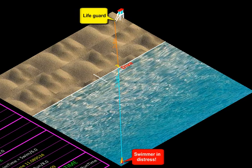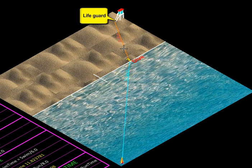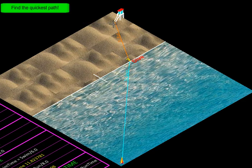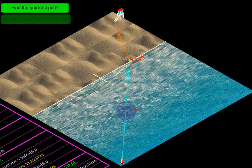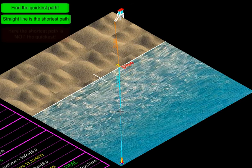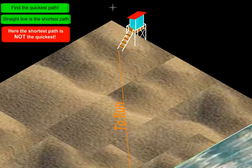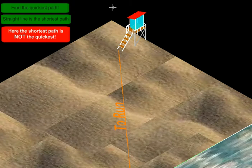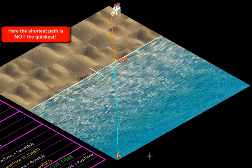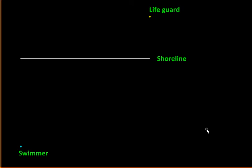The lifeguard right now is near his cabin, so he needs to find the quickest path to reach the swimmer. The shortest path would have been a straight line like this, but in this scenario a straight line path would not work. Let us see why. Here is the situation shown schematically.